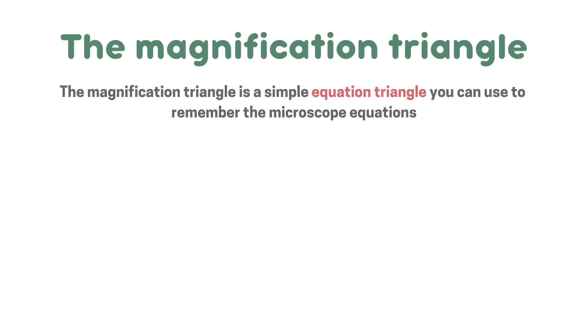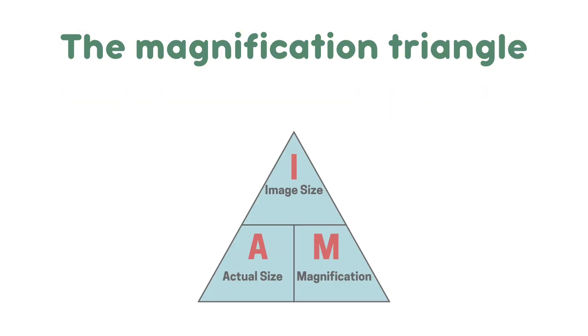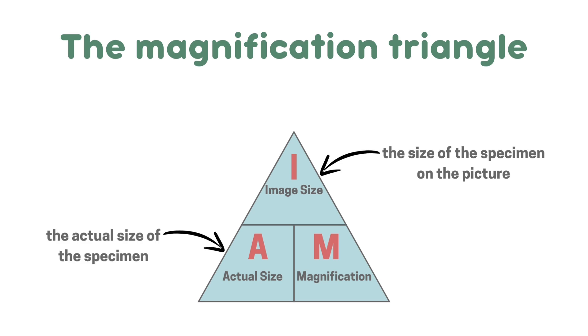The magnification triangle is a simple equation triangle you can use to remember the microscope equations. The image size is at the top and this is the size of the specimen on the picture you're given. Actual size is at the bottom and this is the actual size of the specimen. Magnification is also at the bottom and this is obviously the magnification of the microscope used. A good way to remember it is that the triangle spells I am. I is at the top and am is at the bottom.